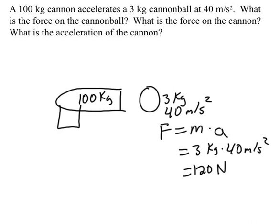Drawing that in — this cannonball is experiencing a force of 120 newtons. Now according to Newton's third law, for every action there is an opposite and equal force. So if the cannonball is being pushed with 120 newtons, the cannon itself is also feeling a force of 120 newtons.